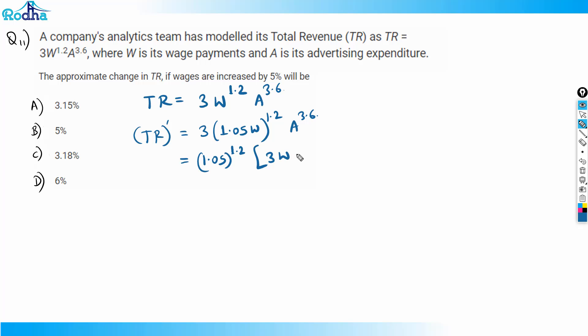What I'm left with inside is 3W to the power 1.2 times A to the power 3.6. If you observe this, this whole thing was TR. So this is 1.05 to the power 1.2 times TR. The whole thing should be TR.